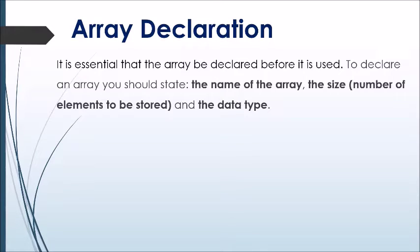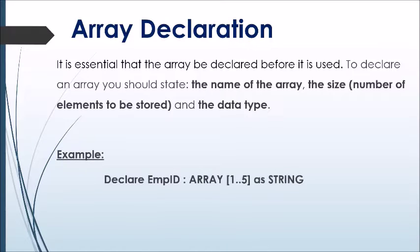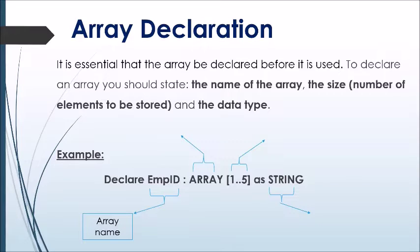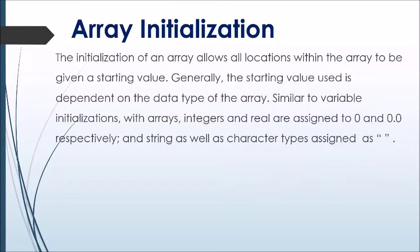Array declaration: it is essential that the array be declared before it is used. To declare an array you should state the name of the array, the size — which is the number of elements to be stored — and the data type. The example shows an array 'empID' declared to store a maximum of five string entries. There are two keywords used: 'declare' and 'array'. The size of the array is enclosed in square brackets showing the lower and upper bound, followed by the data type.